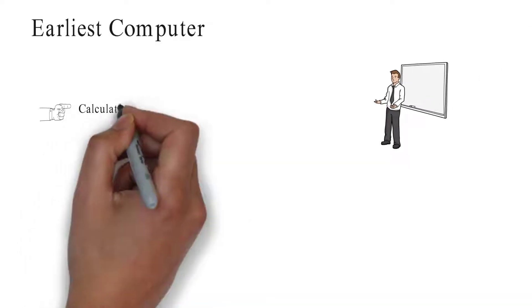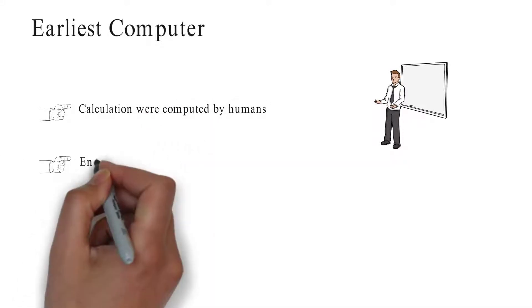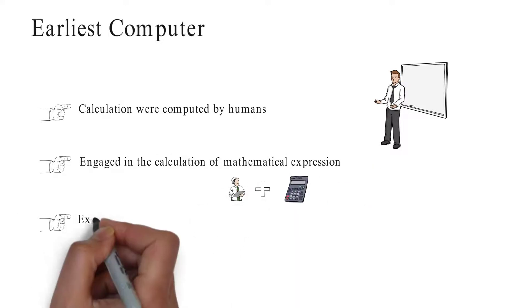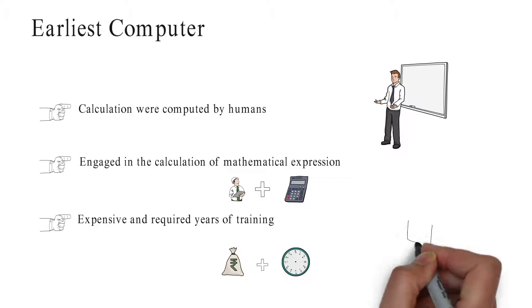In the early period calculations were computed by humans who were engaged in the calculations of mathematical expressions. The human computation was expensive and required years of training in mathematics. Computer was invented through calculation of mathematical expression.